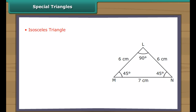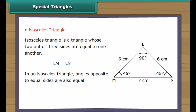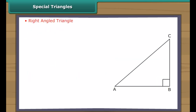An isosceles triangle is a triangle in which two out of three sides are equal to one another. In triangle LMN, LM is equal to LN. In an isosceles triangle, angles opposite to equal sides are also equal. In triangle LMN, angle LMN is equal to angle LNM.